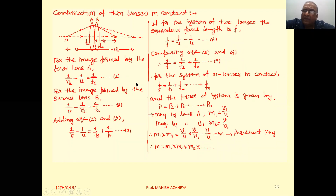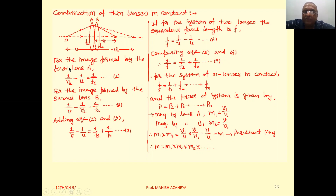Now we apply the lens equation: 1/f = 1/v − 1/u. For the image formed by the first lens A, we can write: 1/v1 − 1/u = 1/f1. This is Equation 1.